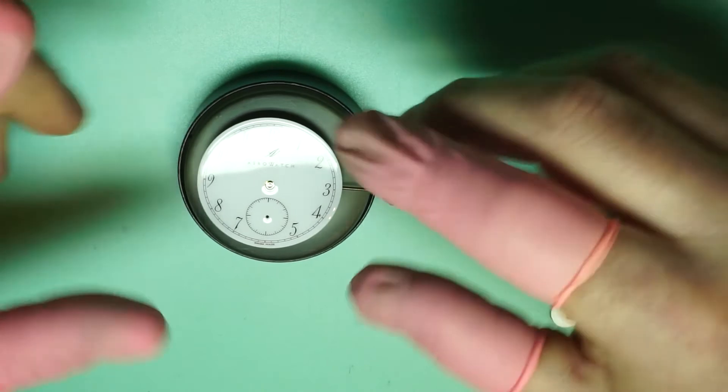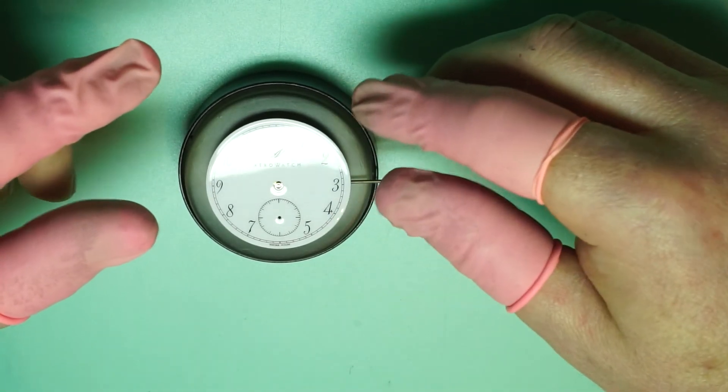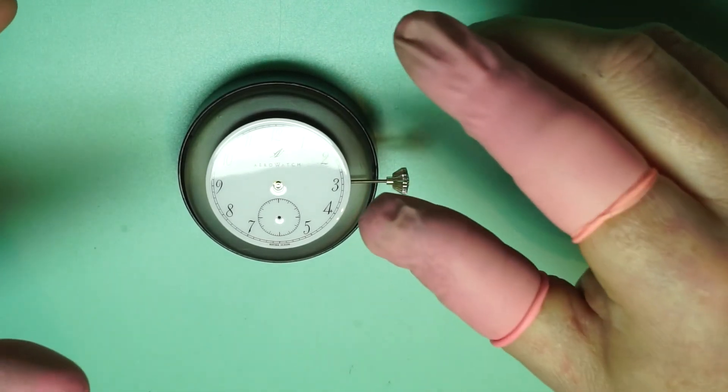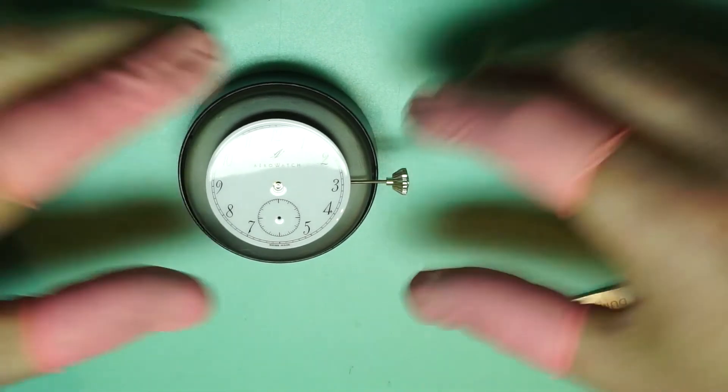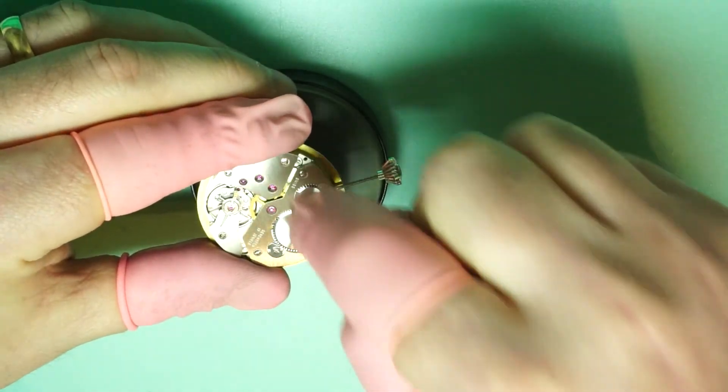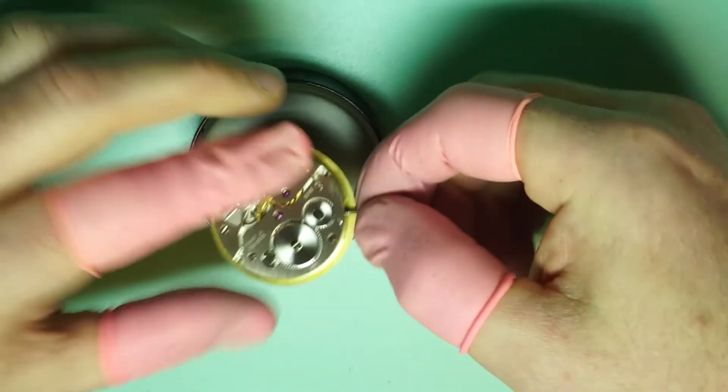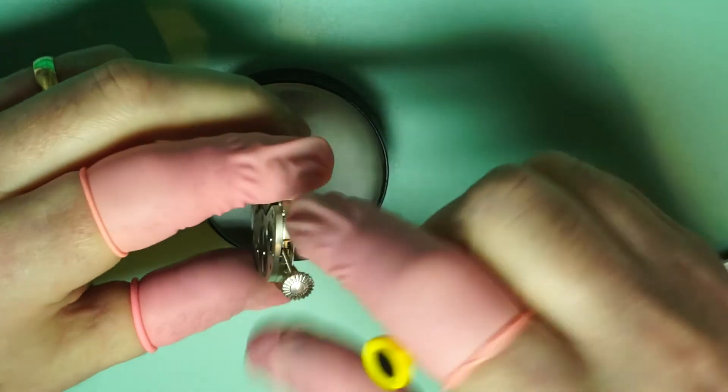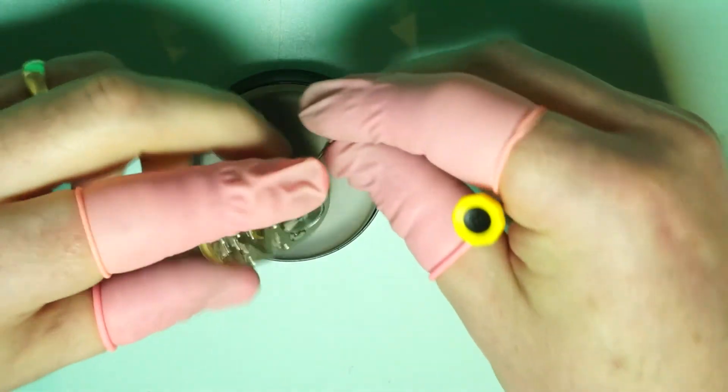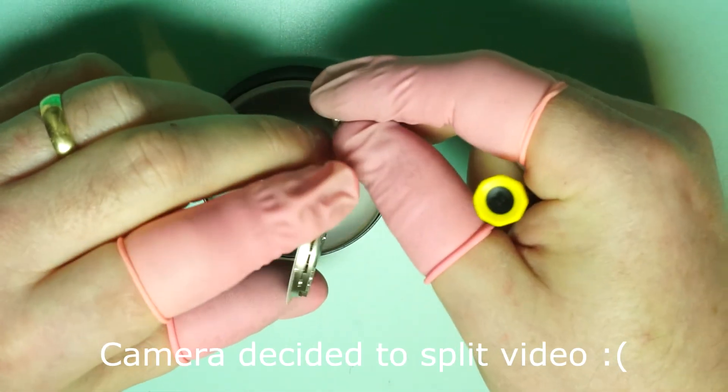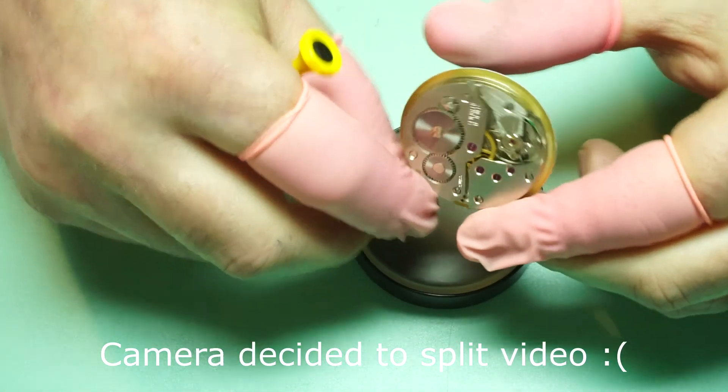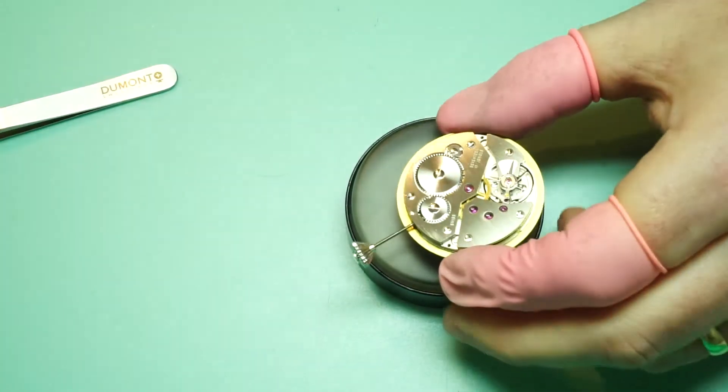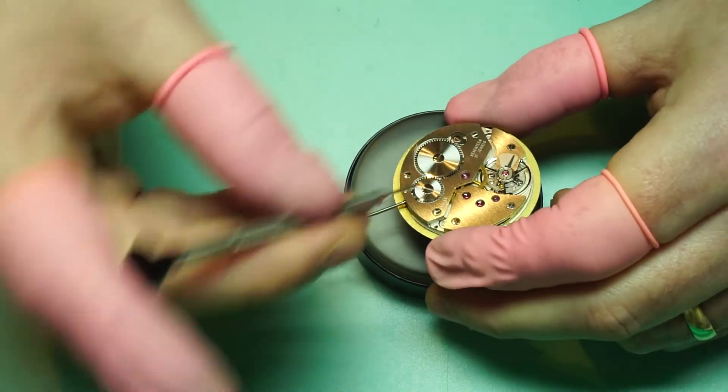So now we want to remove the dial. Now this dial is secured in place by screws that are into the side of the main plate. Other watches may vary. There may be screws that are in the main plate on this side, facing downwards, and you have to unscrew them. But these ones are on the outside. Oh, no, I apologize. On this movement, it is different. They're not on the side.